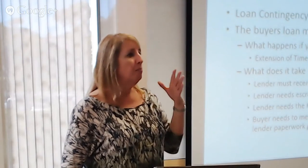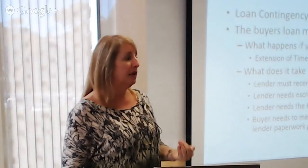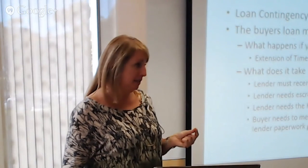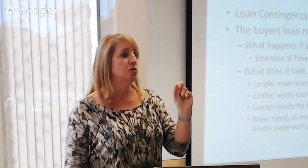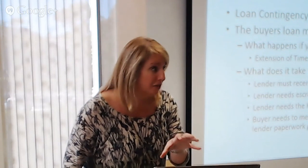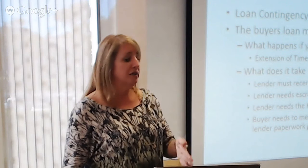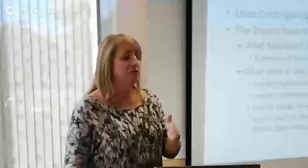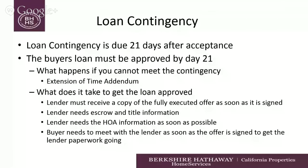The other key thing is that most lenders cannot order an appraisal until the lender's disclosures have been signed. They cannot generate those disclosures until they have a property address — a signed offer. That's why it's imperative, in order to meet our 21 days, that we get the contract to the lender as soon as it's signed, and that the buyer meets with that lender as soon as the contract's signed to get those disclosure papers signed so that the lender can order the appraisal.